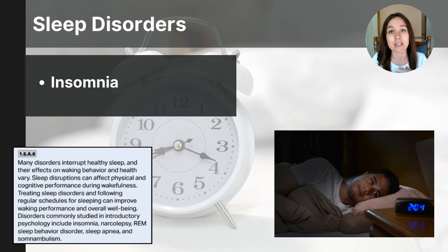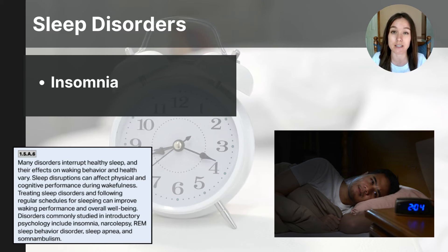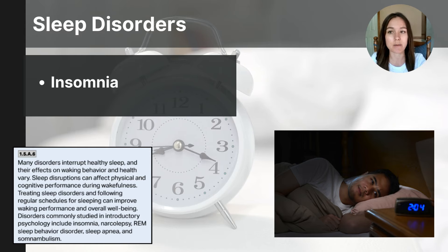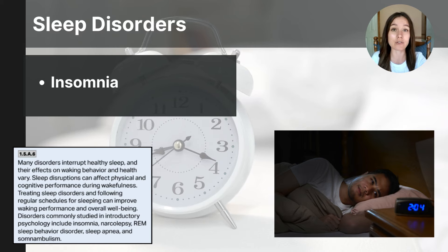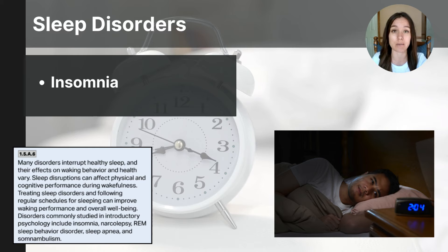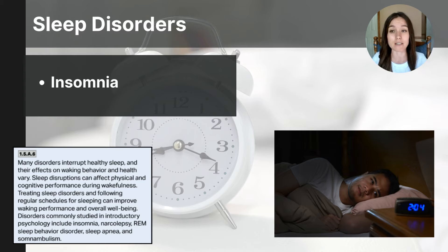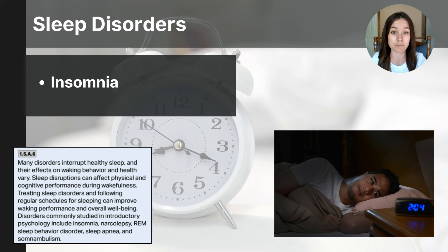The remainder of today's video focuses on common sleep disorders. The first is insomnia. Insomnia affects one in five adults and is characterized by difficulty falling asleep, staying asleep, or waking up early and not being able to get back to sleep. Individuals with insomnia often experience reduced sleep quality, daytime fatigue, irritability, and difficulty concentrating. It can be caused by stress, anxiety, depression, poor sleep habits, or underlying medical conditions. It can be acute, lasting short periods, or chronic, persisting for months or longer, and may require lifestyle changes, behavioral therapies, or medical treatment to manage effectively.